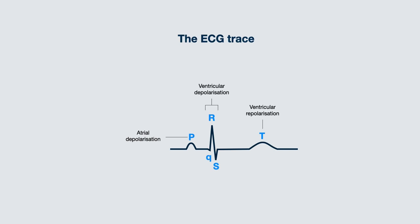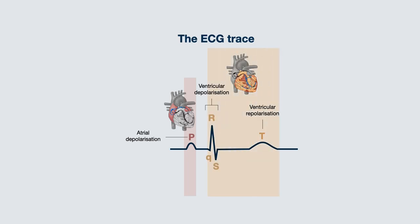Abnormalities of the P wave suggest abnormal changes involving the atria, given that it represents atrial depolarization. Abnormalities of the QRS complex and T wave suggest abnormal changes involving the ventricles. This region is known as the ST segment, representing the time between ventricular depolarization and repolarization. The PR segment represents the time between atrial depolarization and ventricular depolarization.